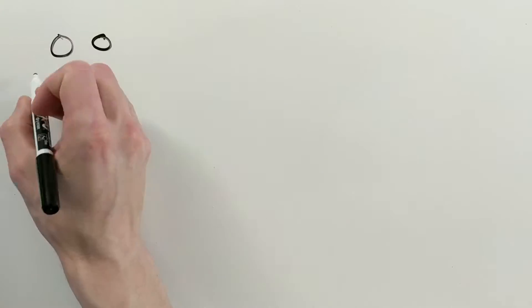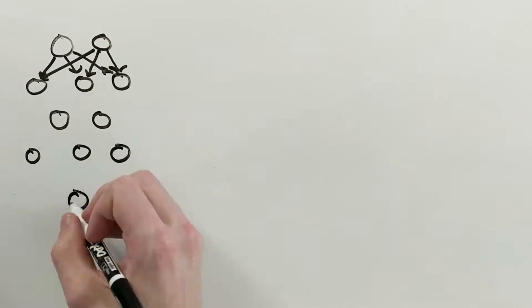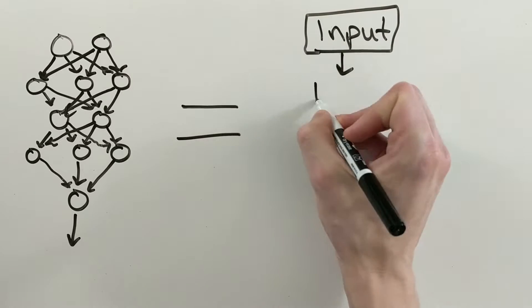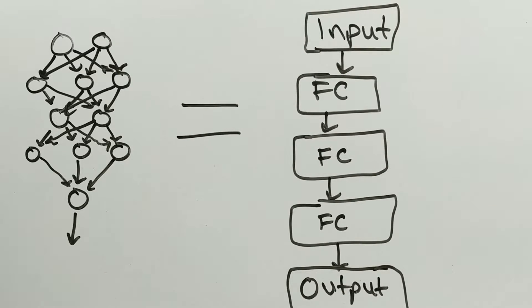For example, you could draw an artificial neural network like this. Then, you could abstract this as an input, three fully connected layers, and an output. You could then reasonably say that this is a deep neural network.